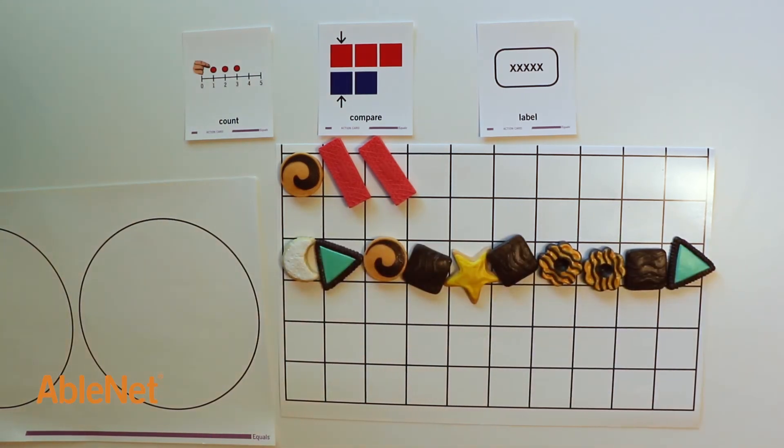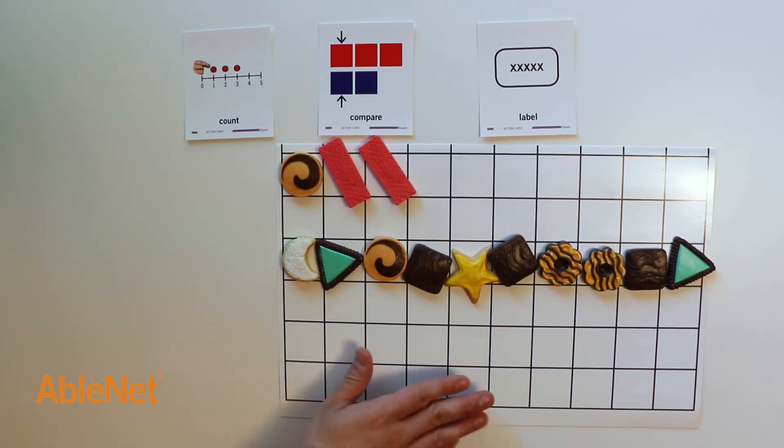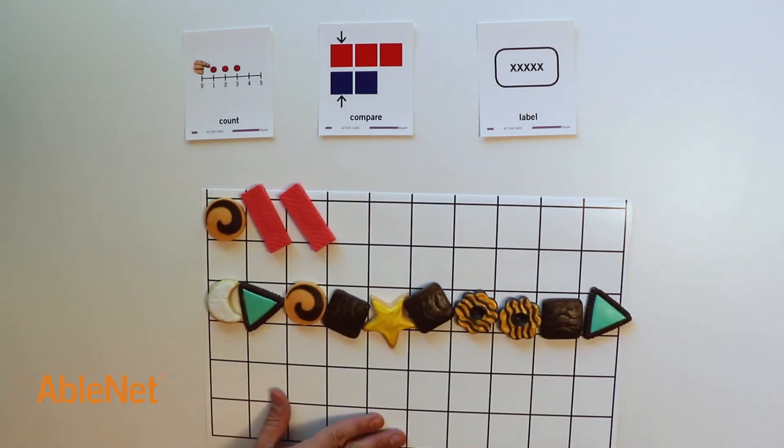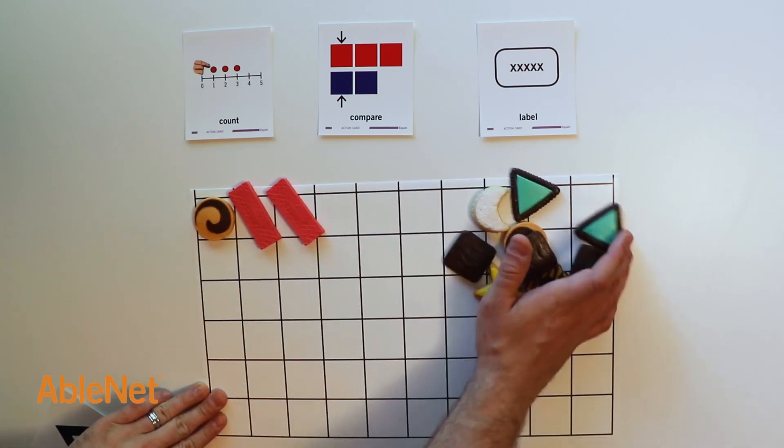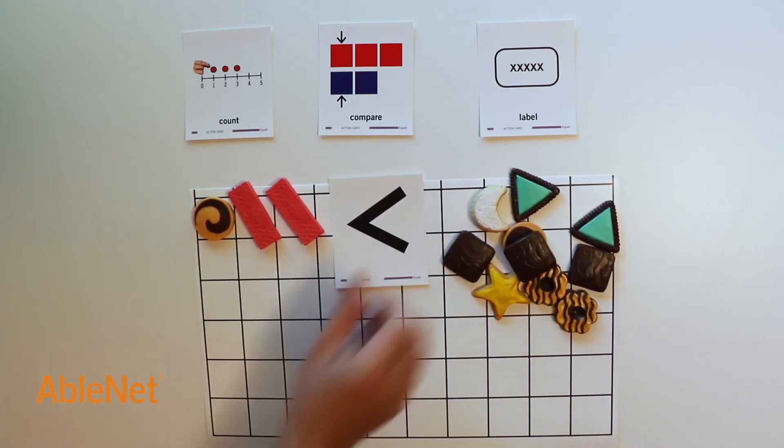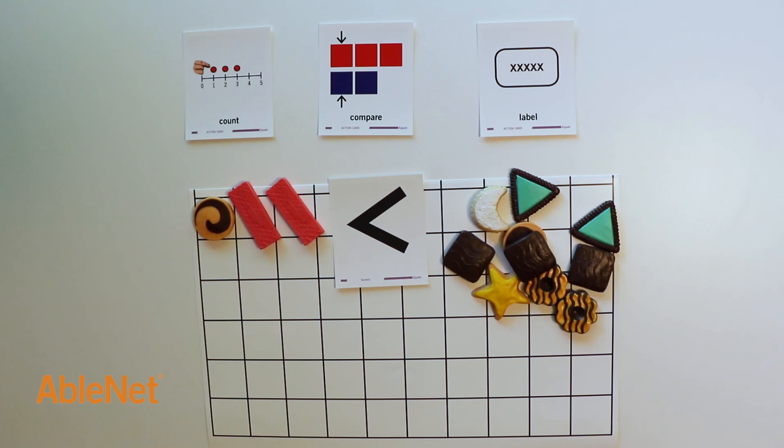Now that the cookies are in rows, I can see the set with pink cookies has less. Mrs. Ainsley can compare sets in rows.